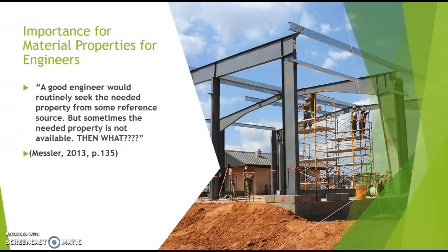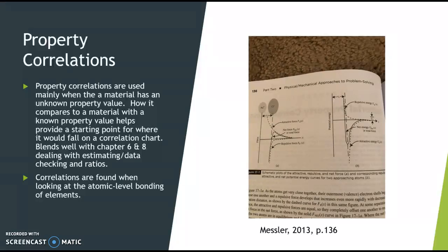A good engineer would routinely seek the needed property from reference sources. The examples given in the book were looking it up on the internet or using a handbook, but there are times when the needed property is not available. So the idea is: what do engineers do at that point? This is where property correlations come into play. Property correlations are used when a material has an unknown property value — for example, when you're not sure what the strength or melting point of a material is.